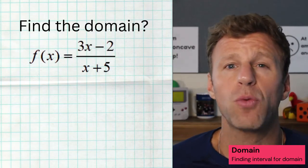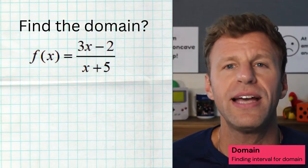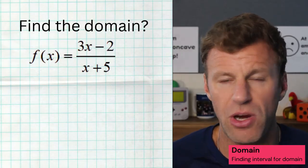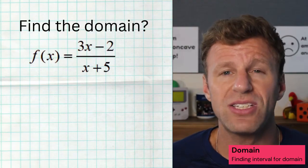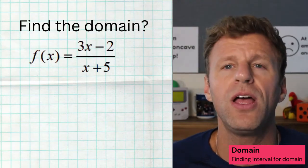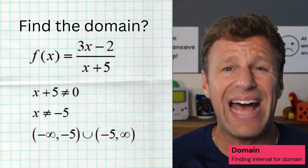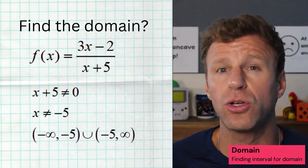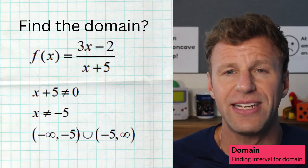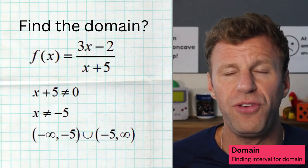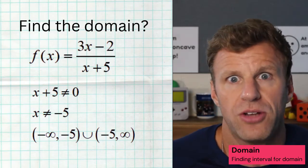Now for this next function, we see a rational function. The key thing with rational functions, or fractions, is that the denominator is not allowed to be zero — you cannot divide by zero. You can divide by positives, you can divide by negatives, you just cannot divide by zero. So any value that makes the denominator zero needs to be left out of the domain. Our denominator is X plus five, which means X cannot equal negative five. So in our domain, we need to include all numbers but skip over negative five. We go from negative infinity to negative five, then continue from negative five to infinity, with parentheses on those negative fives because we cannot include them.